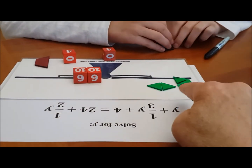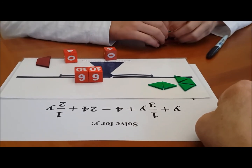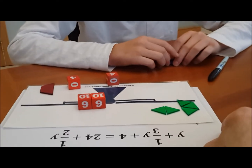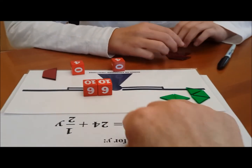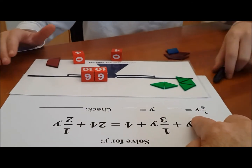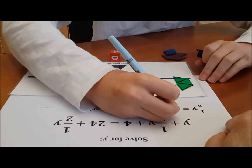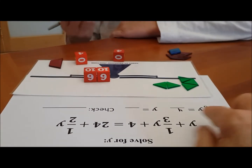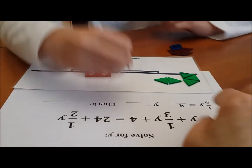Five sixths of y is 20. So how much is each sixth of y? Four. Each sixth of y is four — you have five of them, so each one is four. Please place a four there. Now, if a sixth of y is four, how much is y? Twenty-four.